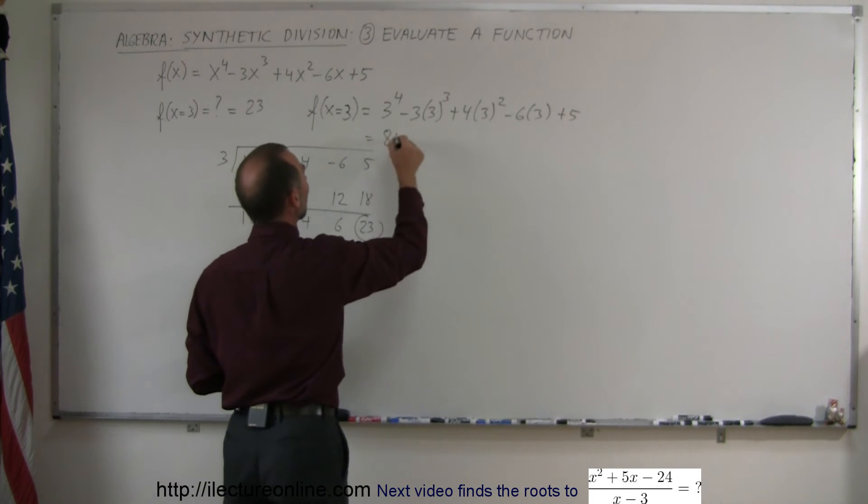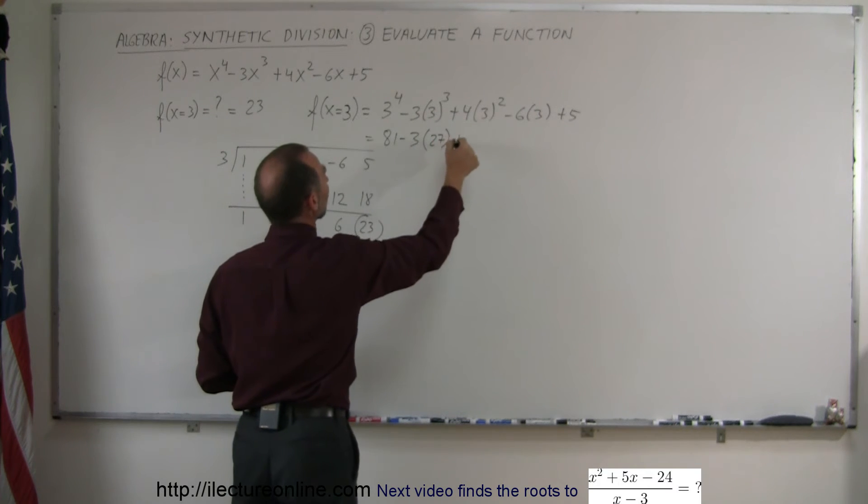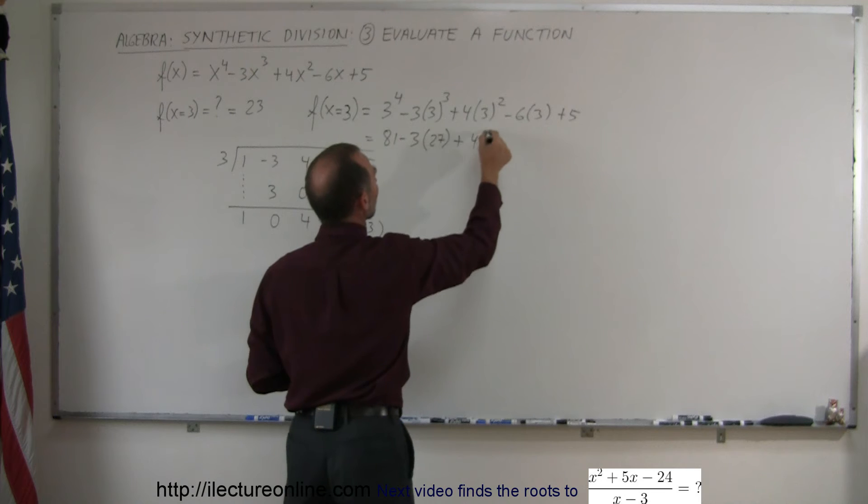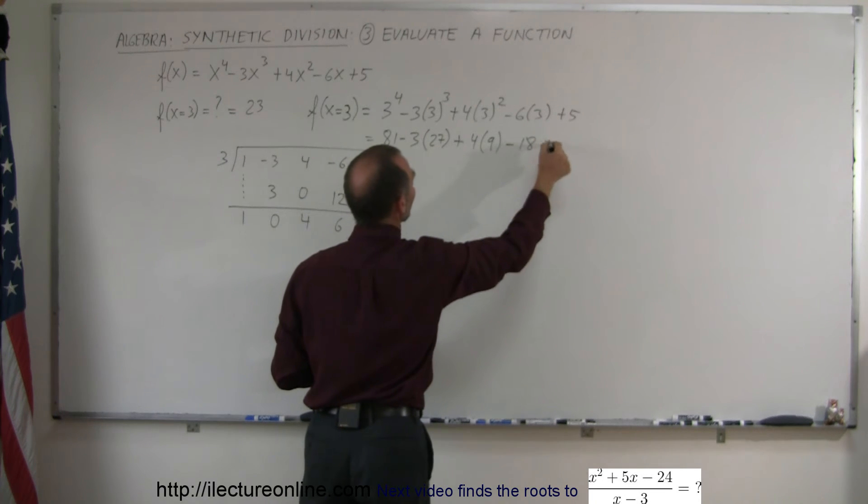So that would be 81 minus 3 times 27 plus 4 times 9 minus 6 times 3, which is 18, plus 5.